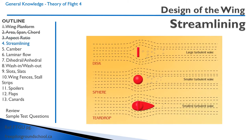Airplanes want to be streamlined to reduce drag. We can see different objects with different amounts of streamlining. A disc obviously has a high amount of drag compared to a teardrop pattern, which has very little drag.